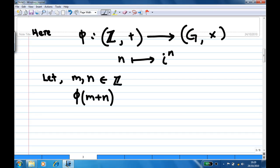According to the definition of φ, this is going to map to i to the power (m+n). Since m+n is an integer, we know by multiplicative laws of exponents this is i to the power m times i to the power n. And i to the power m is actually the image of m under φ, and i to the power n is the image of n under φ.